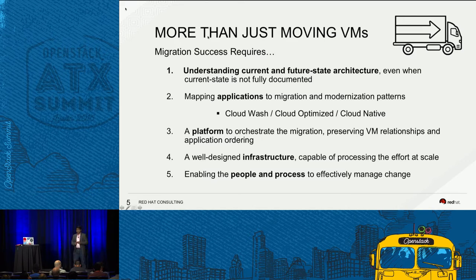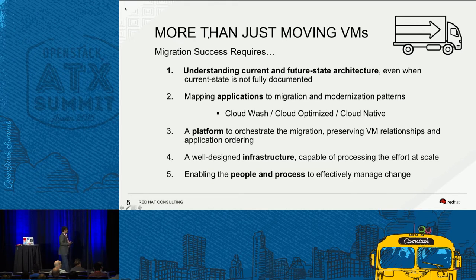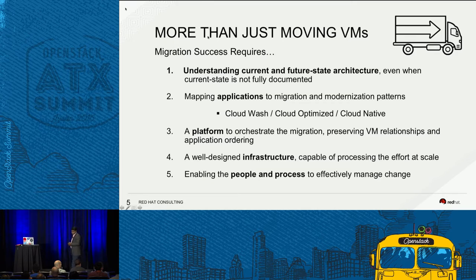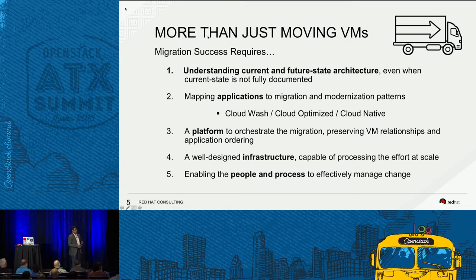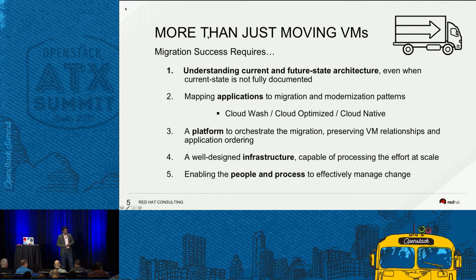Migration success is more than just moving a VM. You can move a VM from VMware to OpenStack, but that won't give you everything you need — you're basically just moving what's available in the source to the target. You need to understand your current state requirements and your future state, and iteratively work toward it. You want to map your applications to the migration and build migration patterns, classifying workloads as either cloud washing — taking an existing workload and moving it to a cheaper virtualization platform without changing how it works — or cloud optimized.